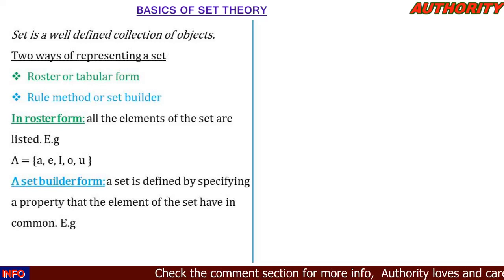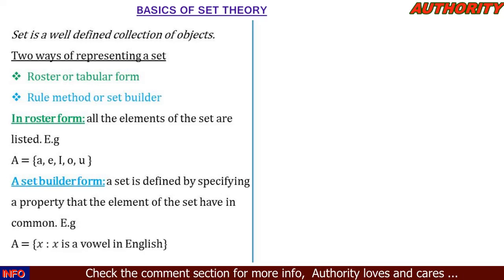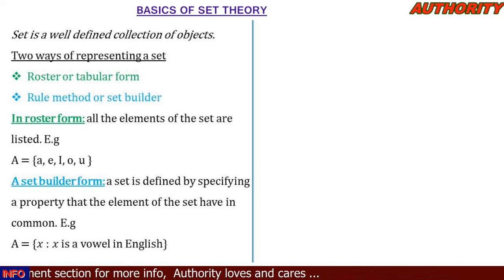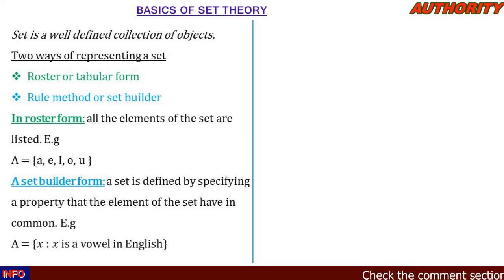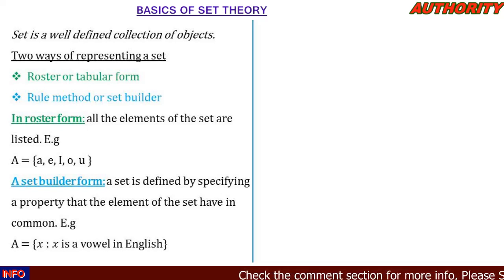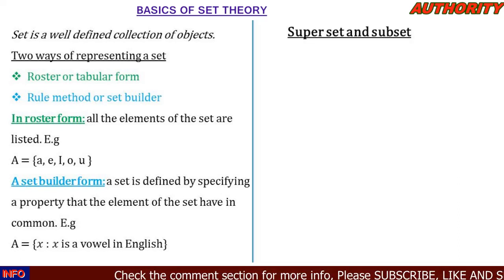For instance, set A is a set of elements x such that x is a vowel in the English alphabet. When you look at this and list them out, you come up with a, e, i, o, u — the same as the roster form example. You can see the difference between the two representations.